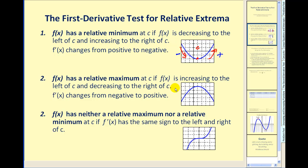And if the opposite occurs — if a function changes from increasing to decreasing at c — we'd have a high point or a relative maximum. And again, the derivative would change from positive to negative in this case.